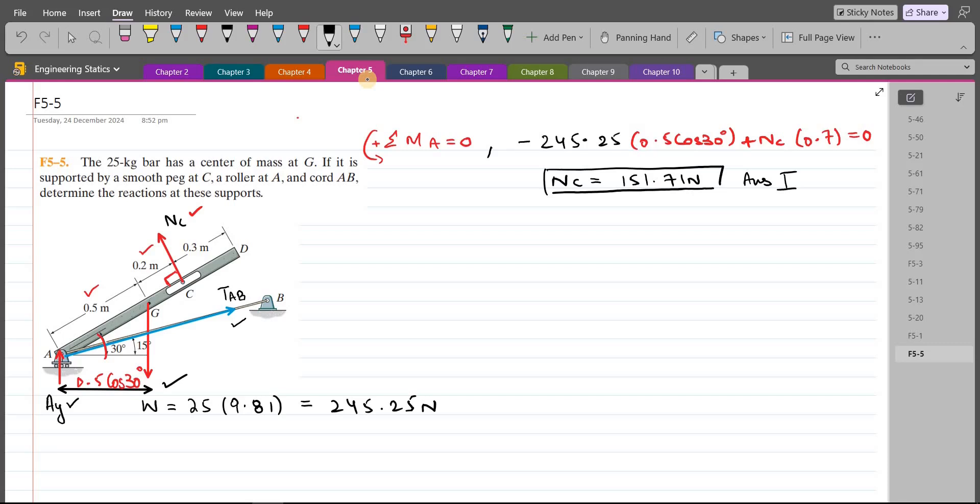Now we can resolve the TAB force and the NC force into their components to find the values of AY and the TAB force. So if I resolve the TAB force, then I have two components, one in the horizontal direction and one in the vertical direction. Let's label them. This right here is TAB sin 15, because this angle is 15, and the horizontal component is TAB cos 15.